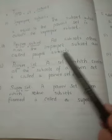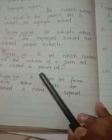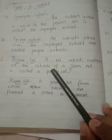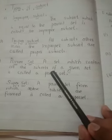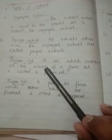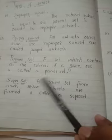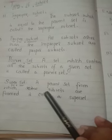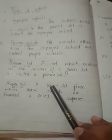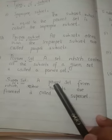Power set: a set which contains all the subsets of given set is called power set. Super set: a parent set from which subsets are formed is called a super set. The parent set from which we make all subsets, that parent set is also called super set.